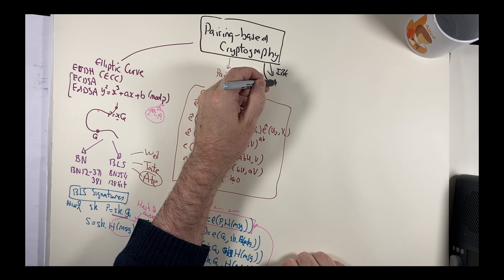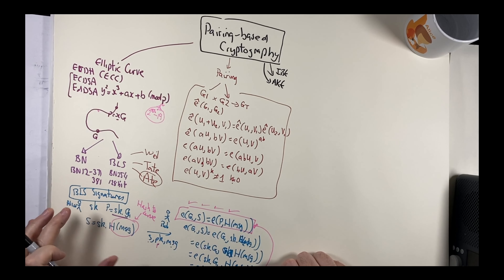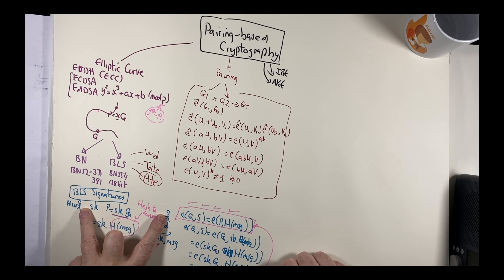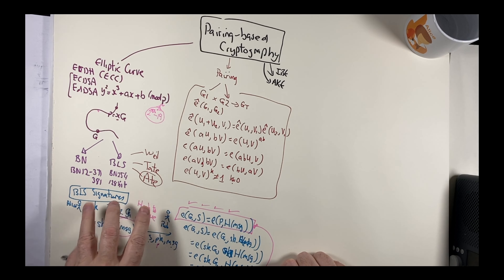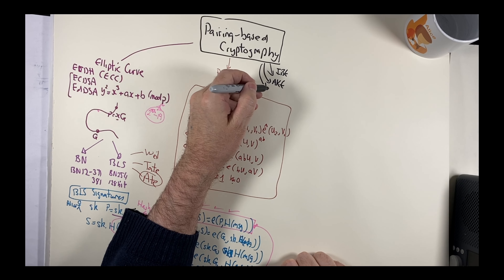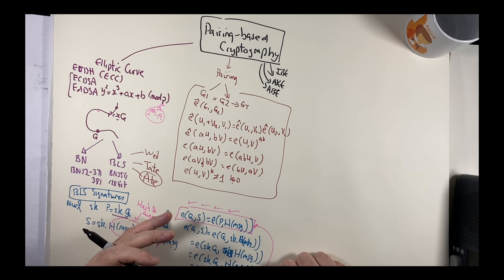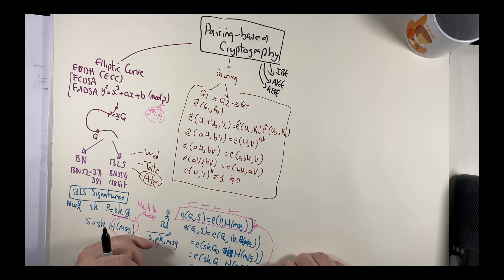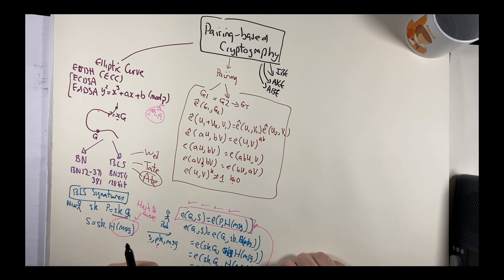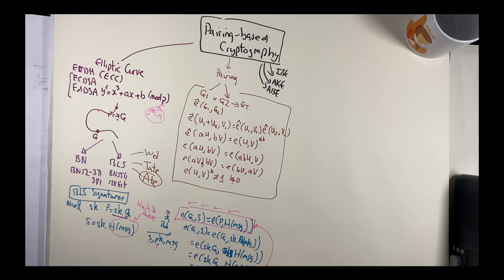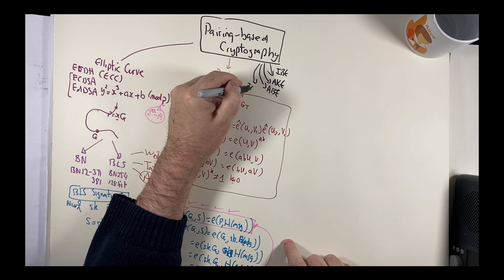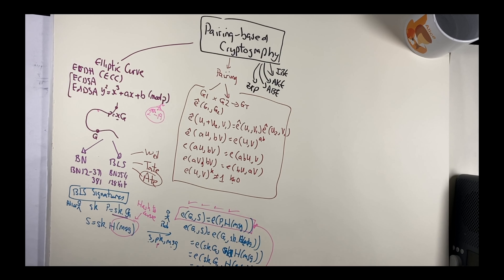We can also use authenticated key exchange, where Bob and Alice generate the same shared key authenticated through each other's identities. Another area is attribute-based encryption, where an encryption key is generated based on a set of attributes such as location or time. But one of the widest current usages is within zero-knowledge proofs, which allow us to prove things without giving away the original data.